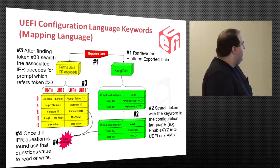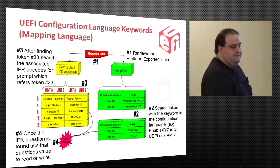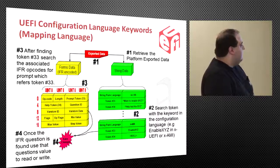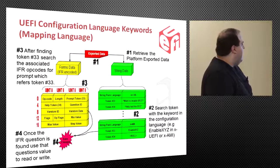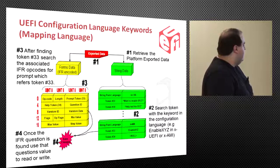Here we have a graphic. Up top we see HII at number one, where we can retrieve the platform exported data. Then at number two, we search tokens with keywords in the configuration language, either in XUEFI or XAMI. Then at number three, after finding the token — say number 33 — we search the associated IFR opcodes for the prompt which refers to token number 33. At number four, once the IFR question is found, we use that question's value to read or write.